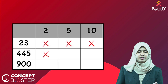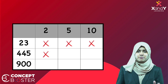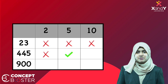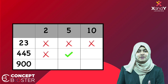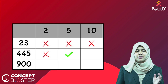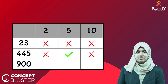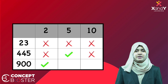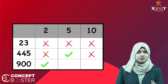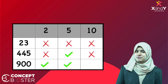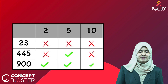Next, 445: it is not even, so it is not divisible by 2. It ends with 5, so it is divisible by 5. It does not end with 0, so it is not divisible by 10. Finally, 900: it is an even number, so it is divisible by 2. It ends with 0, so it is divisible by both 5 and 10.